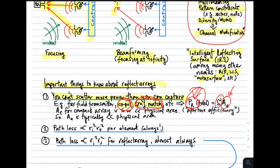Furthermore, the effective aperture for a compact array is going to be less than — or much less than — the physical area. Certainly, if the array is fully sampled, that is, its aperture satisfies the Nyquist criterion for sampling, then the effective aperture is going to be less than the physical area. It might be much, much less than the physical area because of polarization, matching characteristics, and these other things. So aperture efficiency plays a role here.